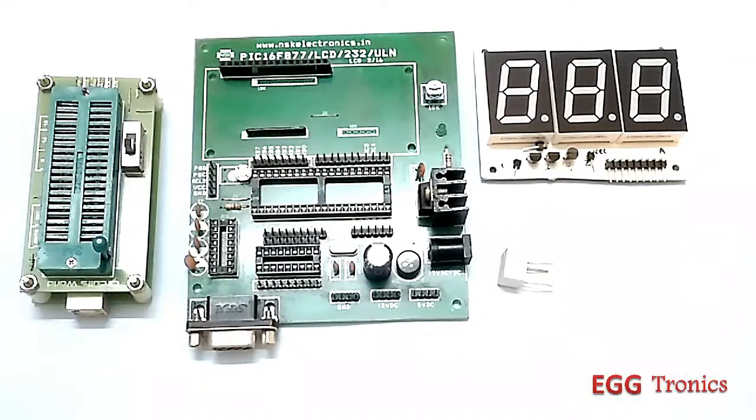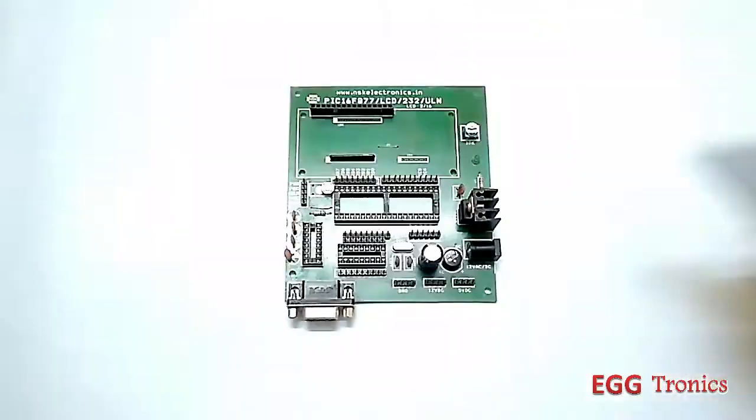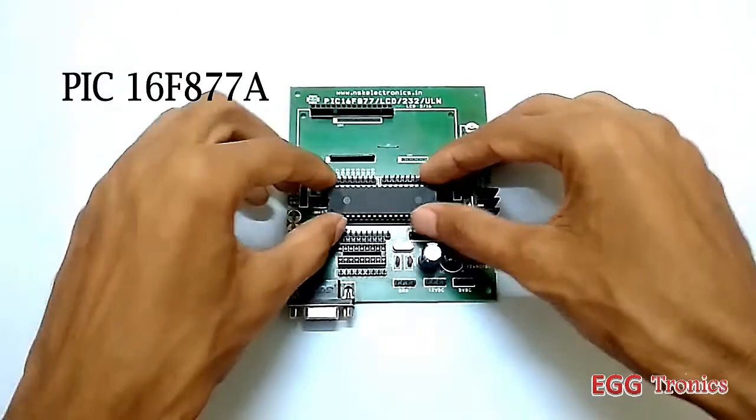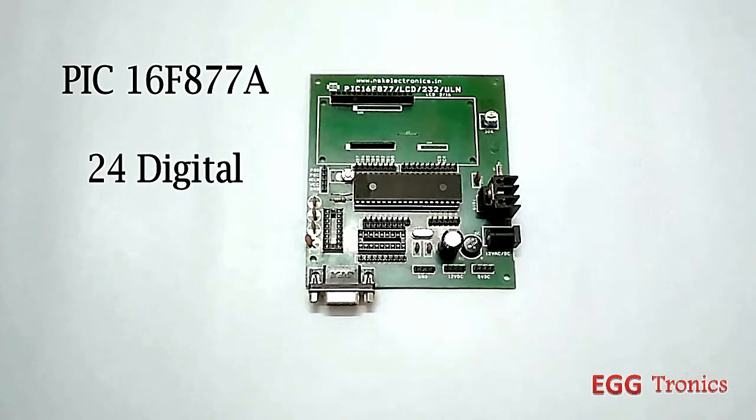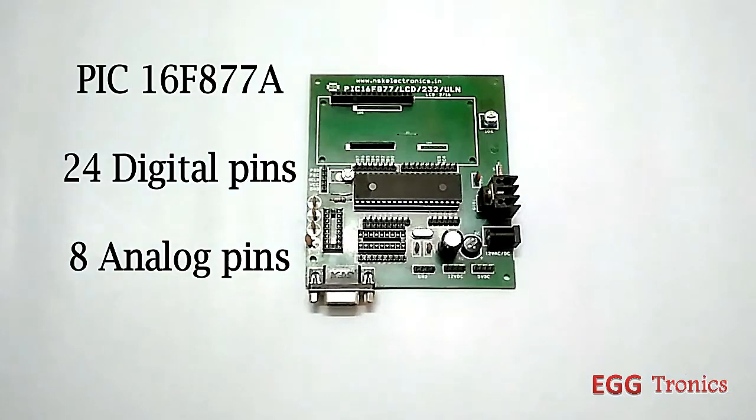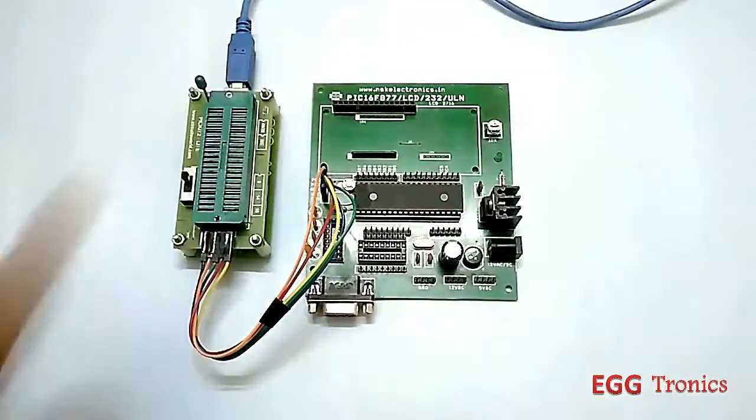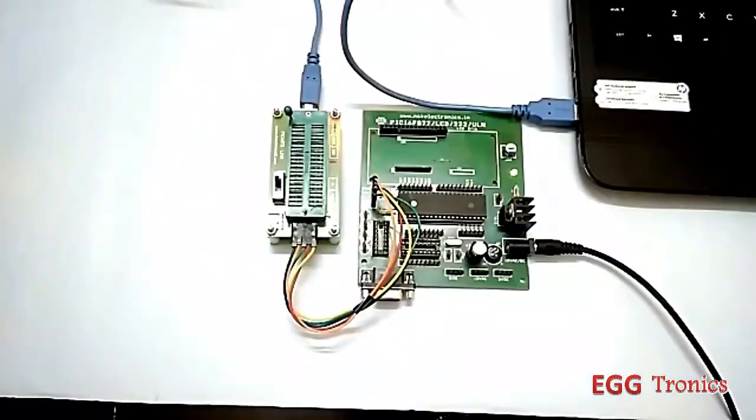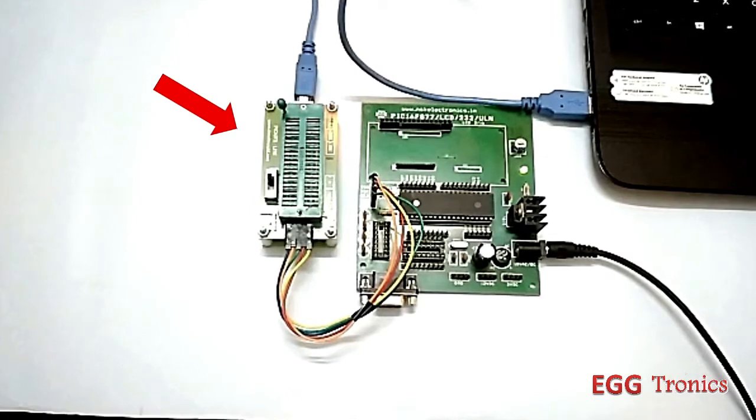Let's start with interfacing. The microcontroller I'll be using is PIC 16F877A, which apart from all digital pins has 8 analog pins and incorporates a 10-bit ADC. And connect the PICkit 2 programmer.